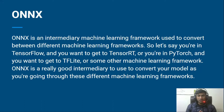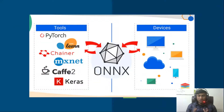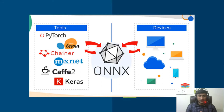ONNX first converts your model to the ONNX format, and from that ONNX format you can convert it to any framework model type. ONNX also optimizes your model — suppose you want to do inferencing but your trained model is not sufficient for that.